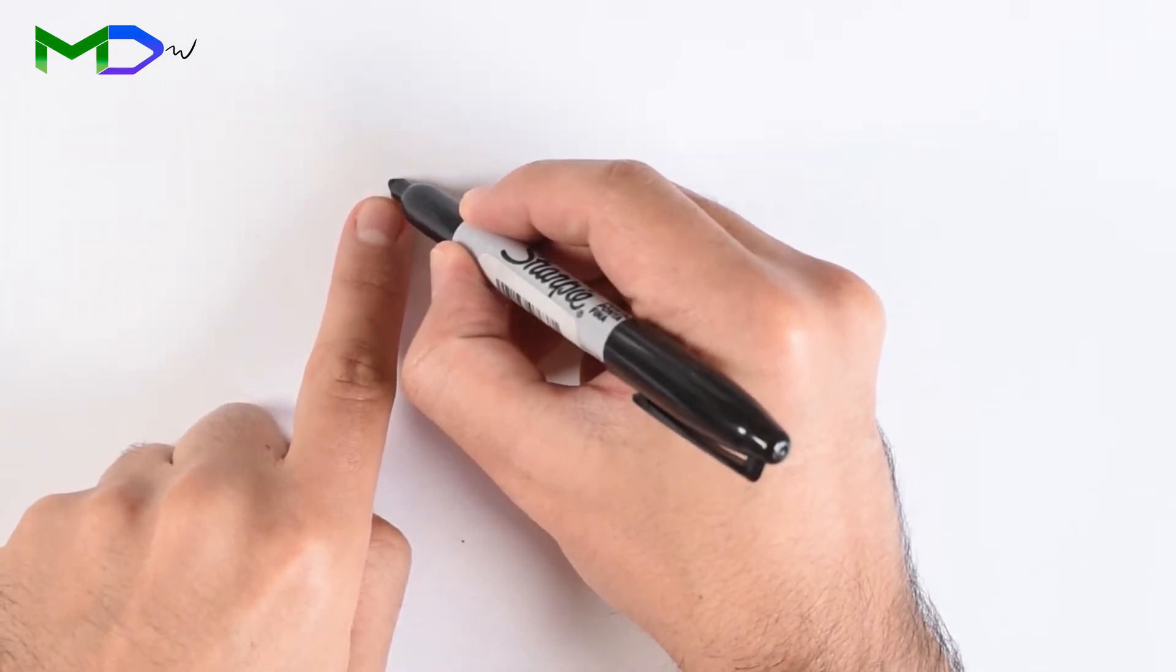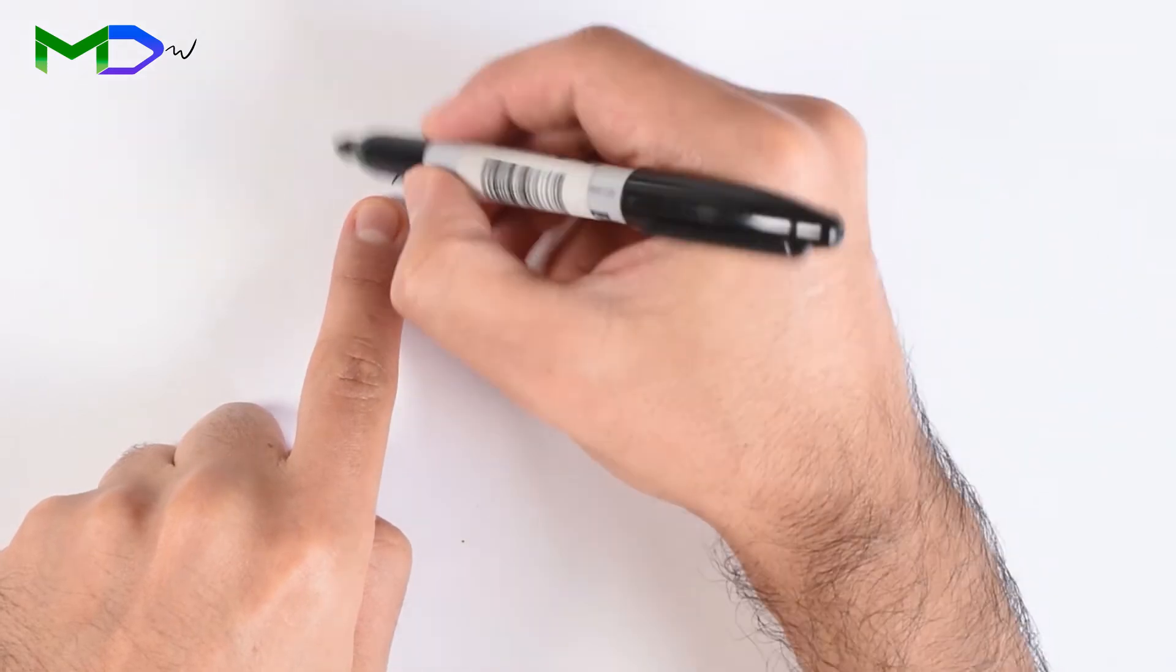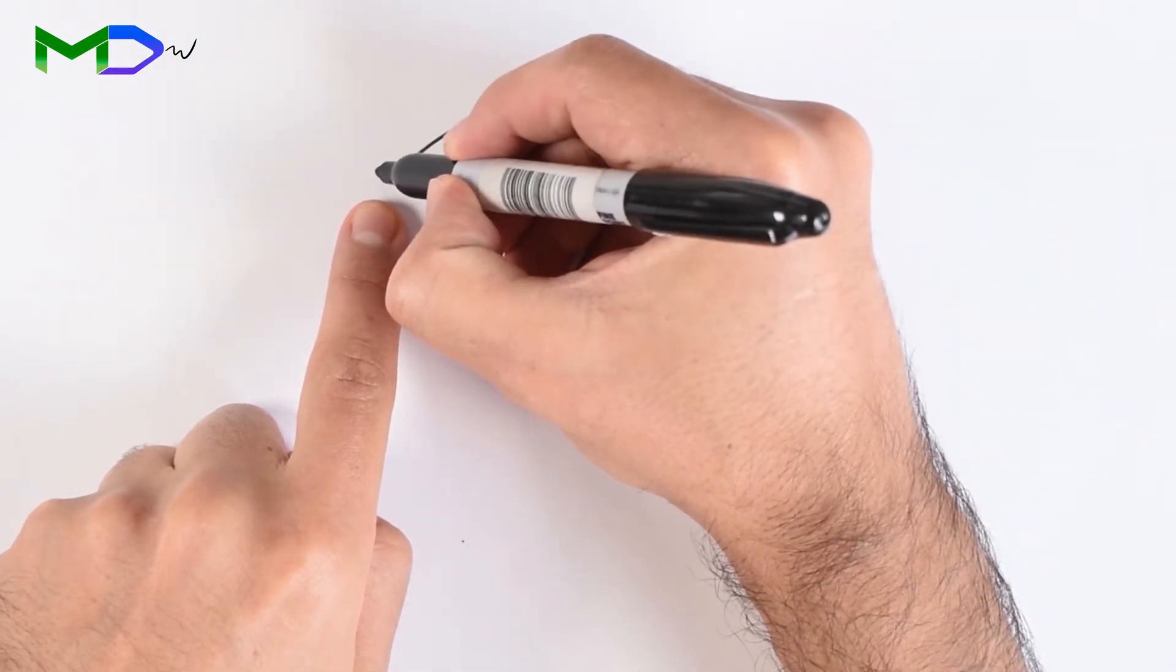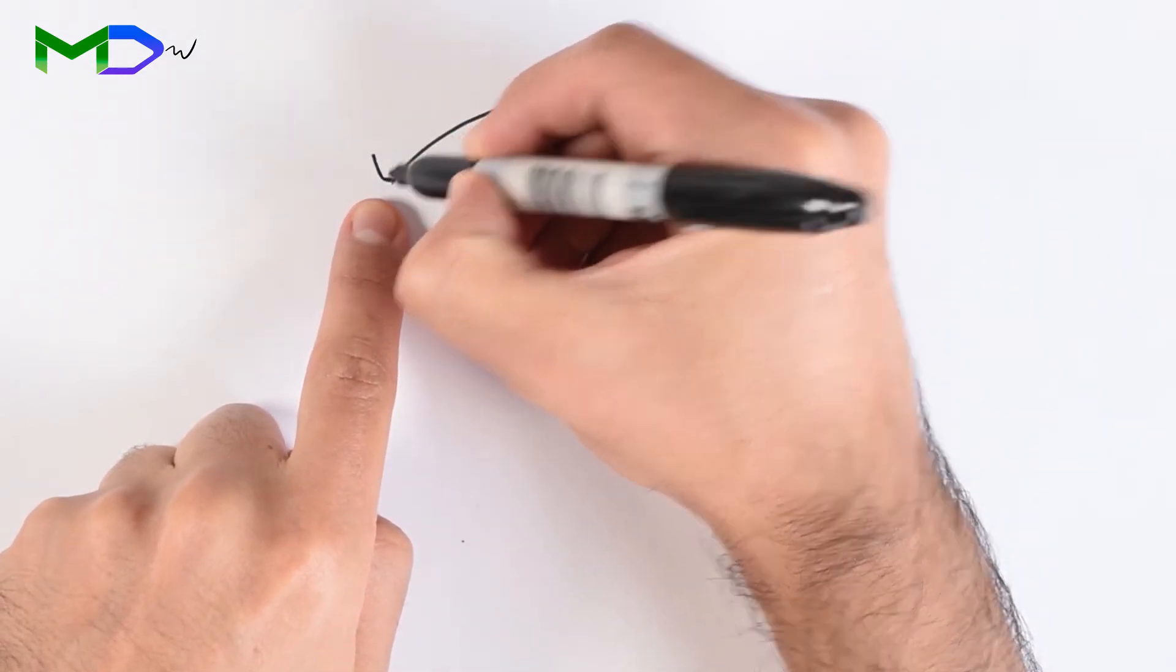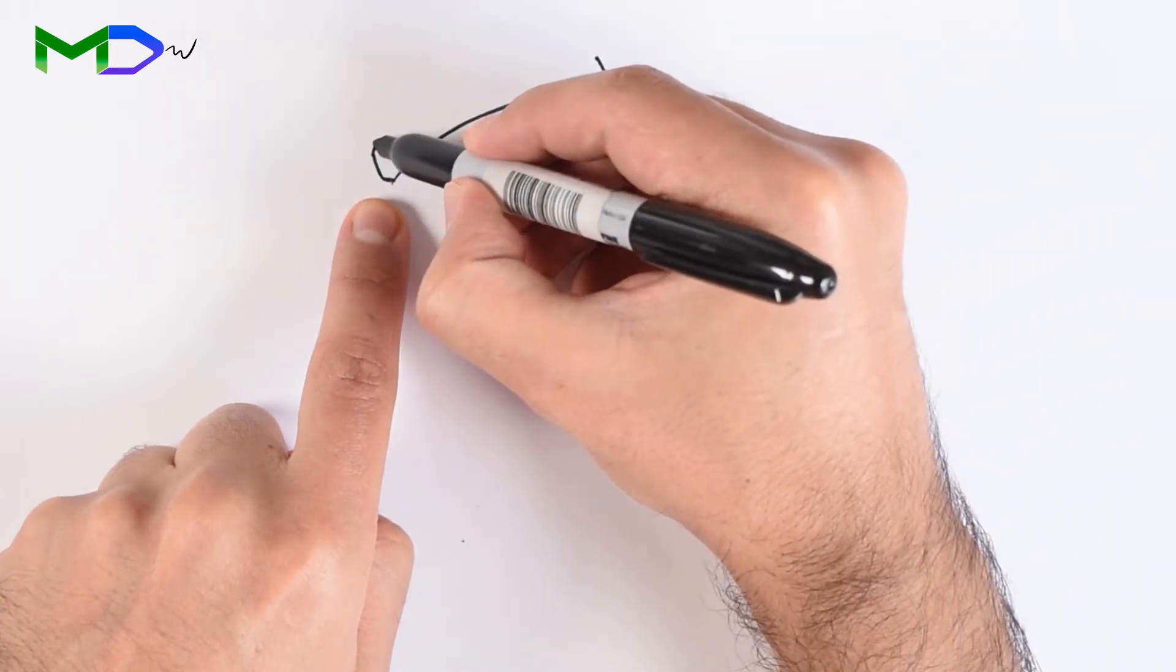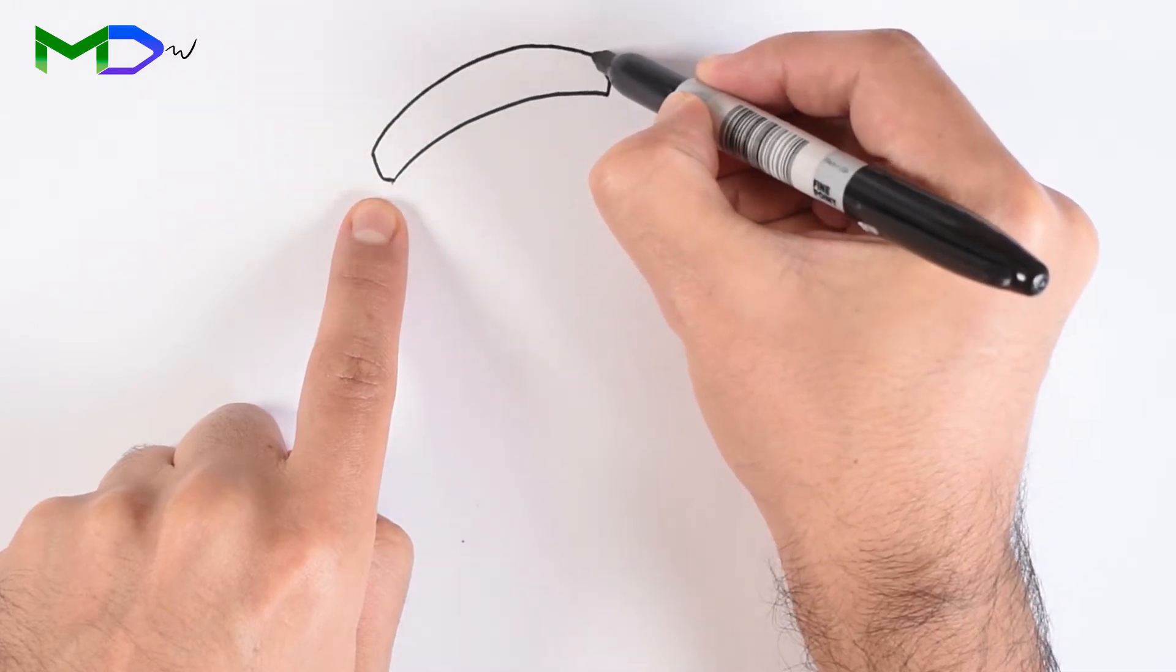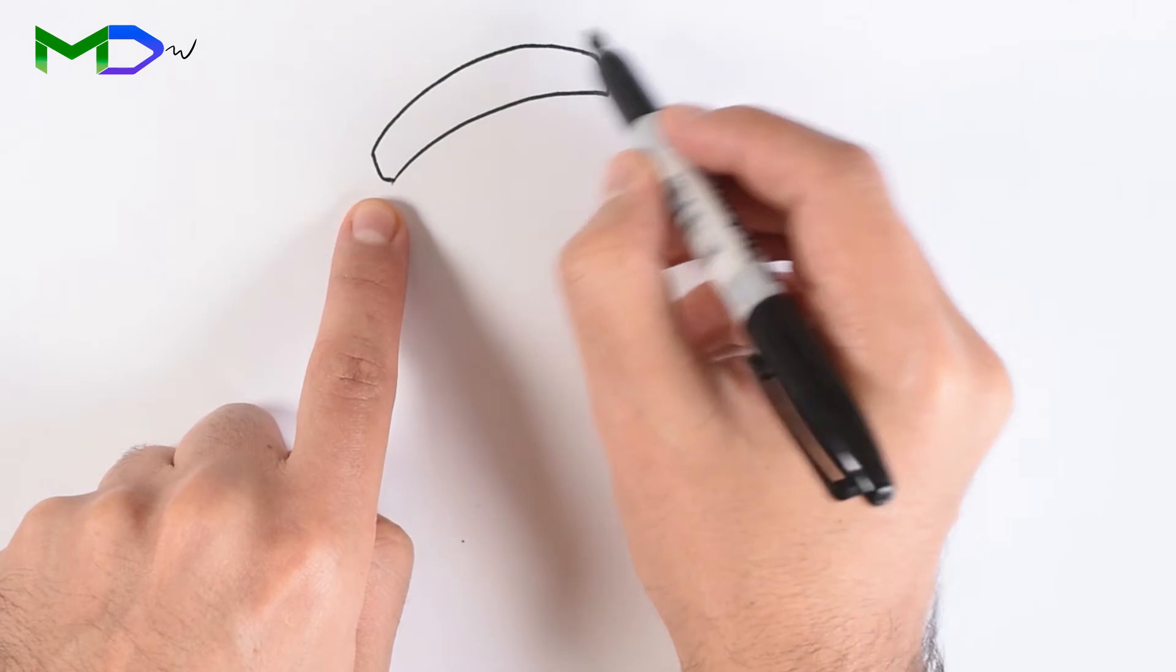Start from one point to create the headband, then an extra line, and then connect the tips. From one point going up and then to the side, then some extra lines.